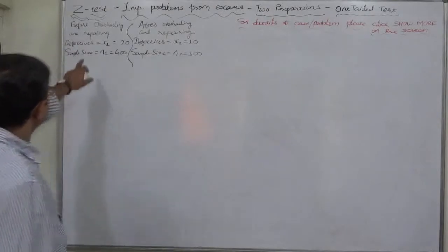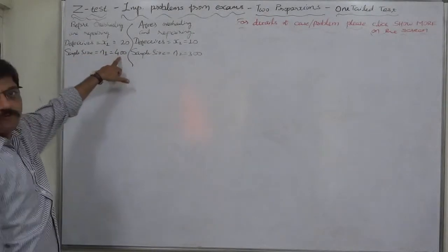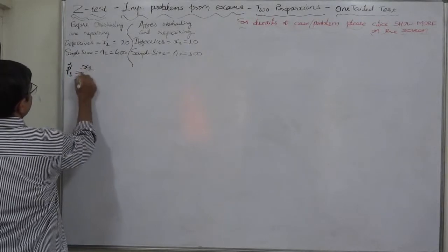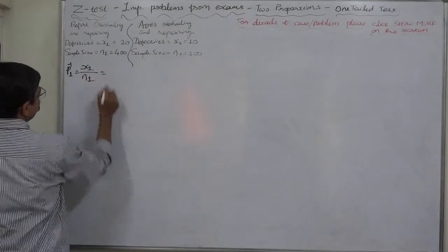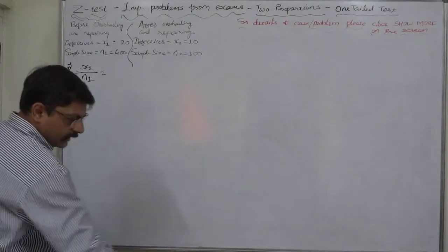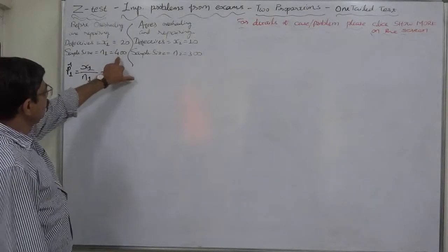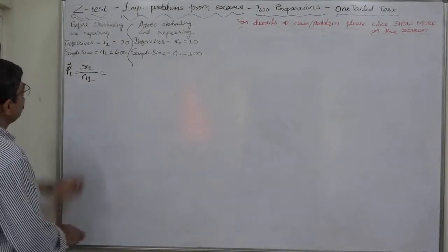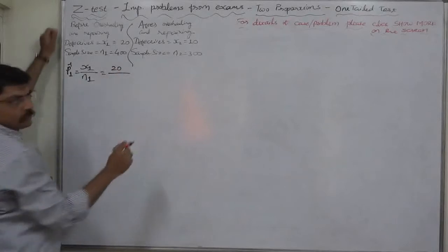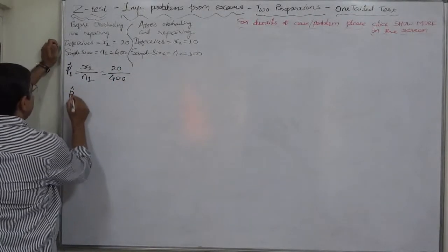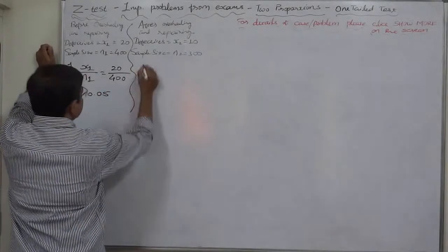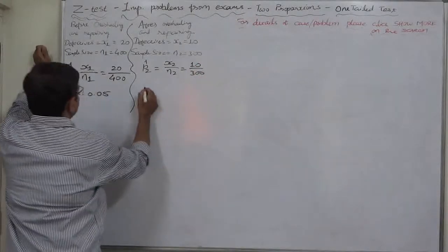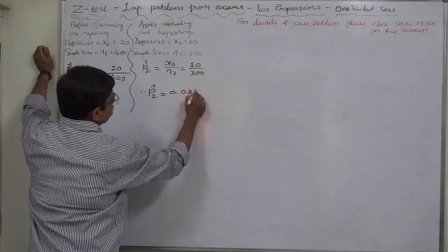Before repairs: 20 defective articles in a batch of 400, so P̂₁ = 20/400 = 0.05. After repairs: 10 defective articles in a batch of 300, so P̂₂ = 10/300 = 0.0333.